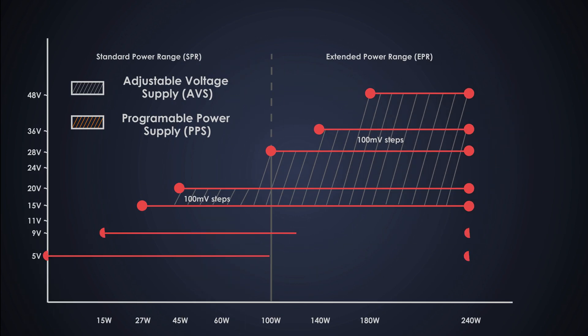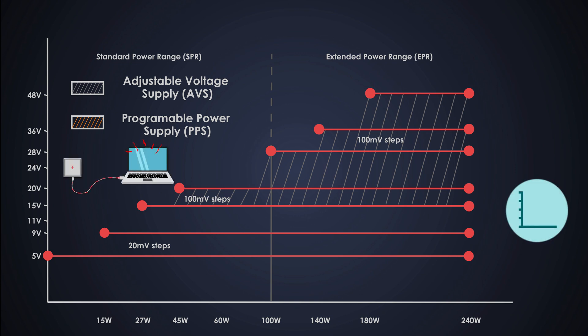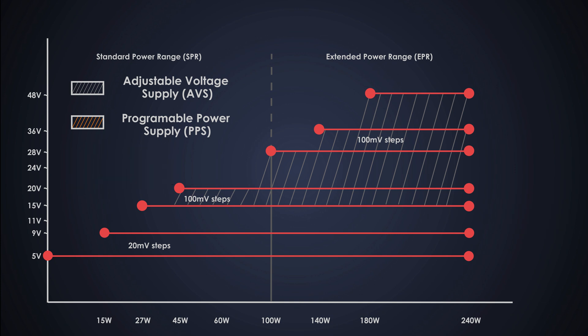PPS provides even finer control with 20 millivolt steps, and unlike AVS, PPS allows real-time voltage adjustment during a charging cycle. PPS is typically used to charge batteries directly, bypassing the need for a dedicated battery charger, which reduces the complexity and size of the device's power management system. It also helps thermal performance by providing exactly the voltage level the battery pack needs.